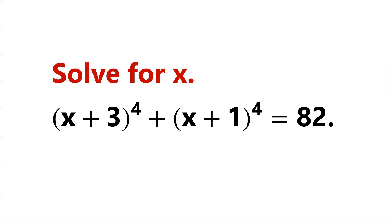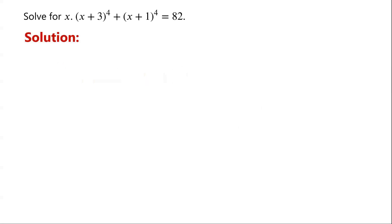Solve the Quartic Equation: (X plus 3) all to the power of 4, plus (X plus 1) all to the power of 4, equals 82. The equation has two quartic terms: (X plus 3) to the power of 4, and (X plus 1) to the power of 4, which are powers of a binomial.